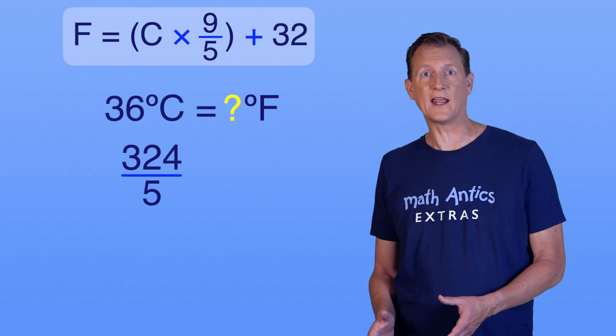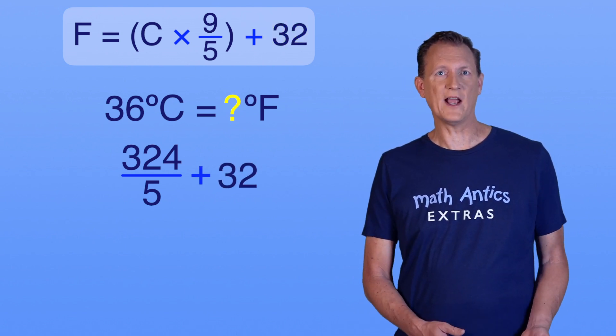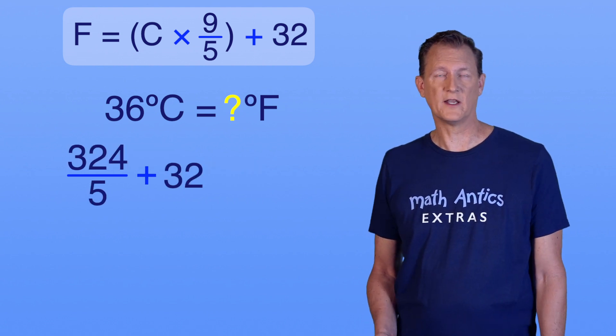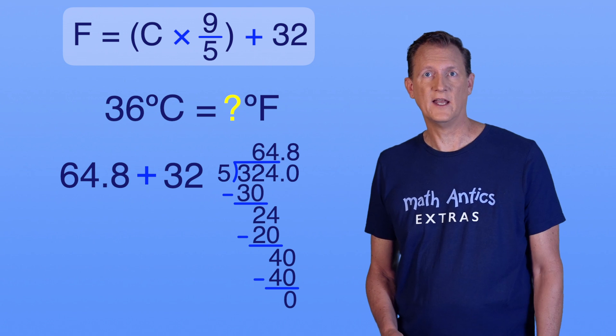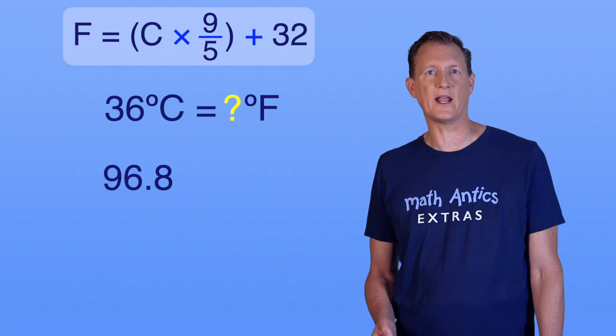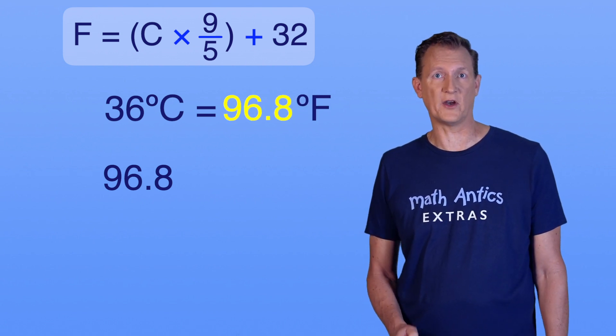Then we take that and add 32. Since it's not that easy to add a number to an improper fraction, let's convert 324 over 5 to a decimal first. 324 divided by 5 is 64.8. Now we can add it more easily. 64.8 plus 32 equals 96.8. So 36 degrees Celsius is 96.8 degrees Fahrenheit.